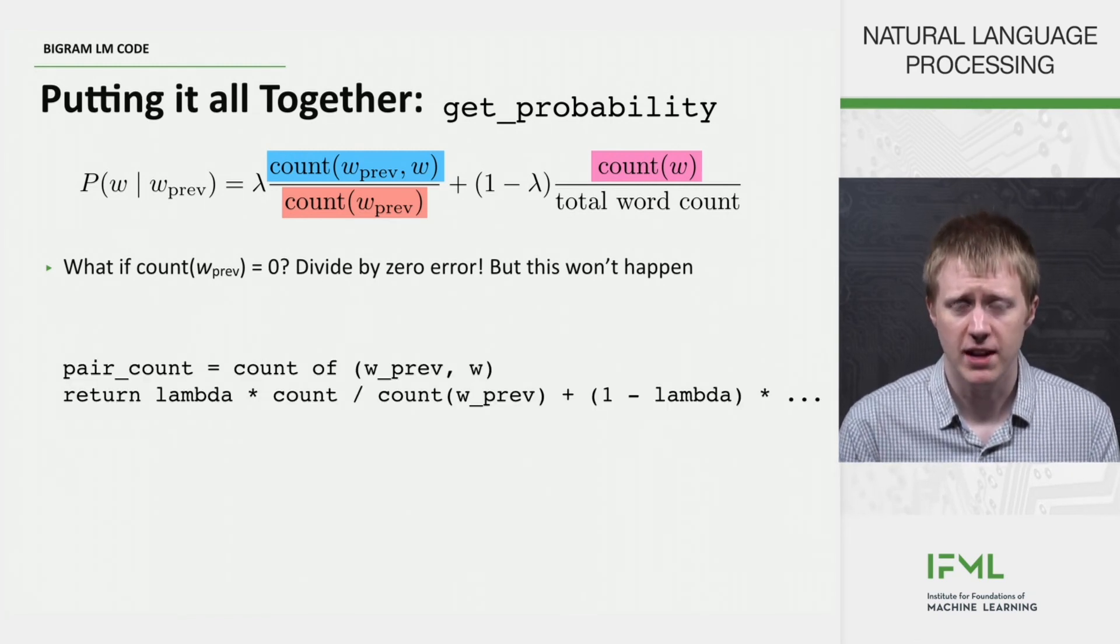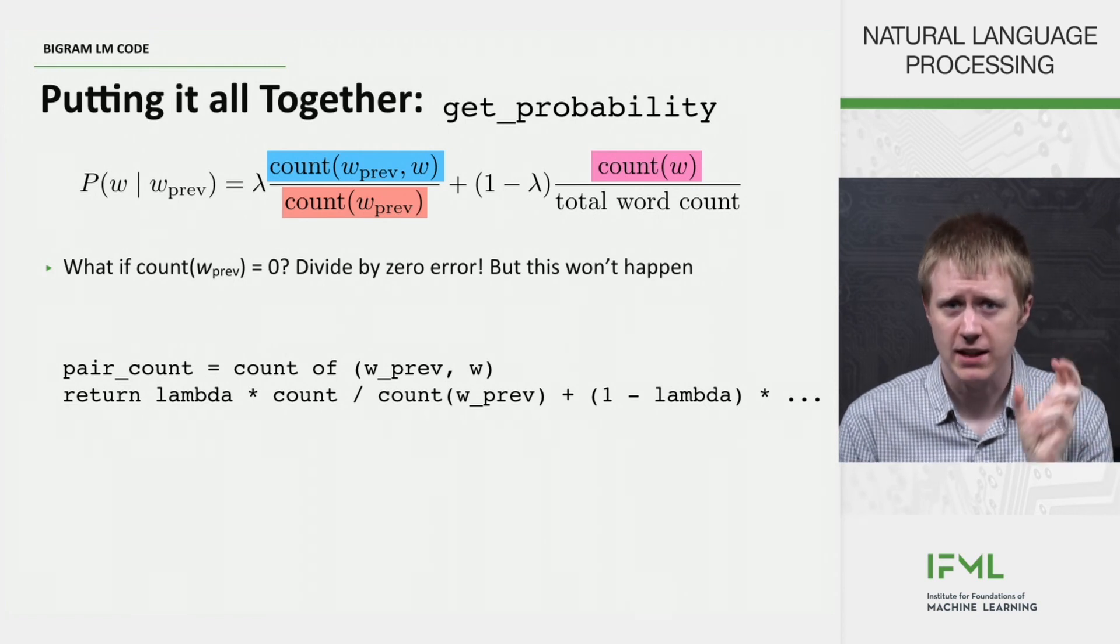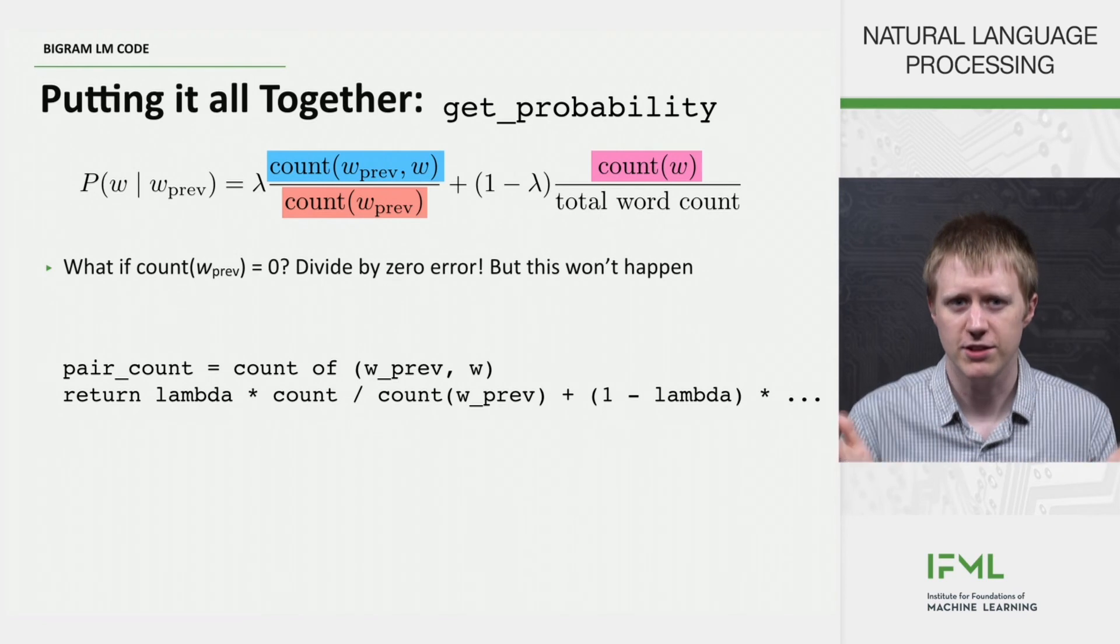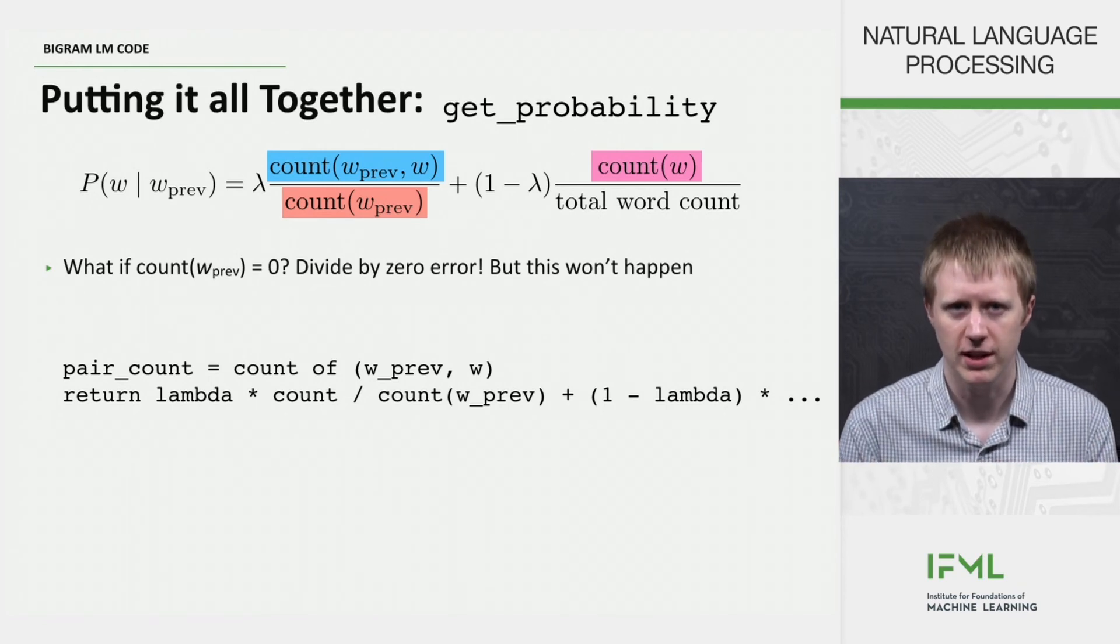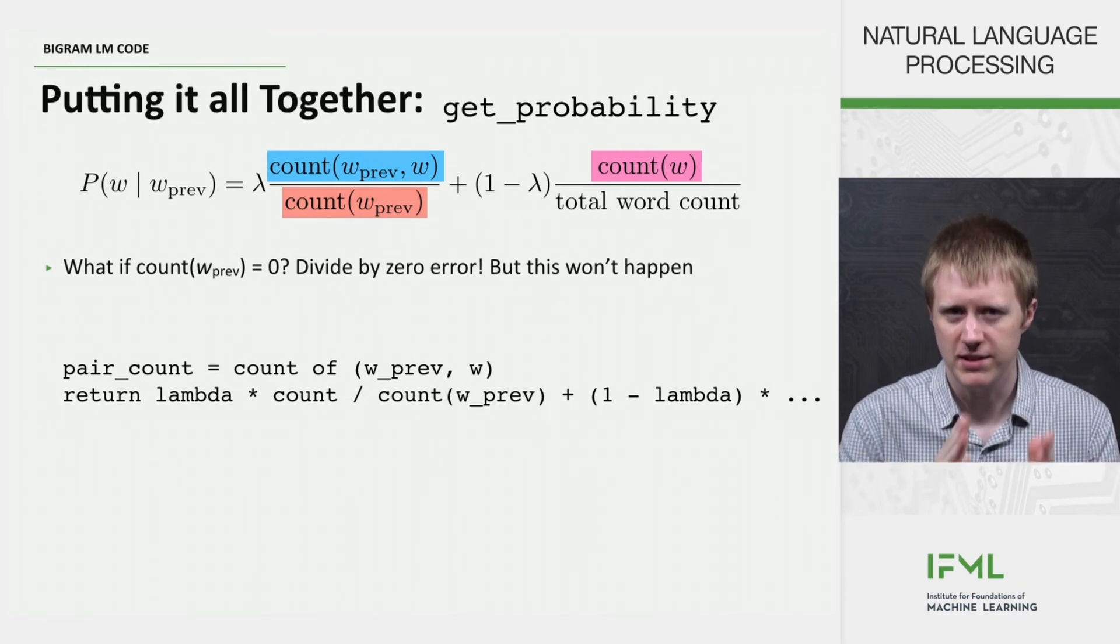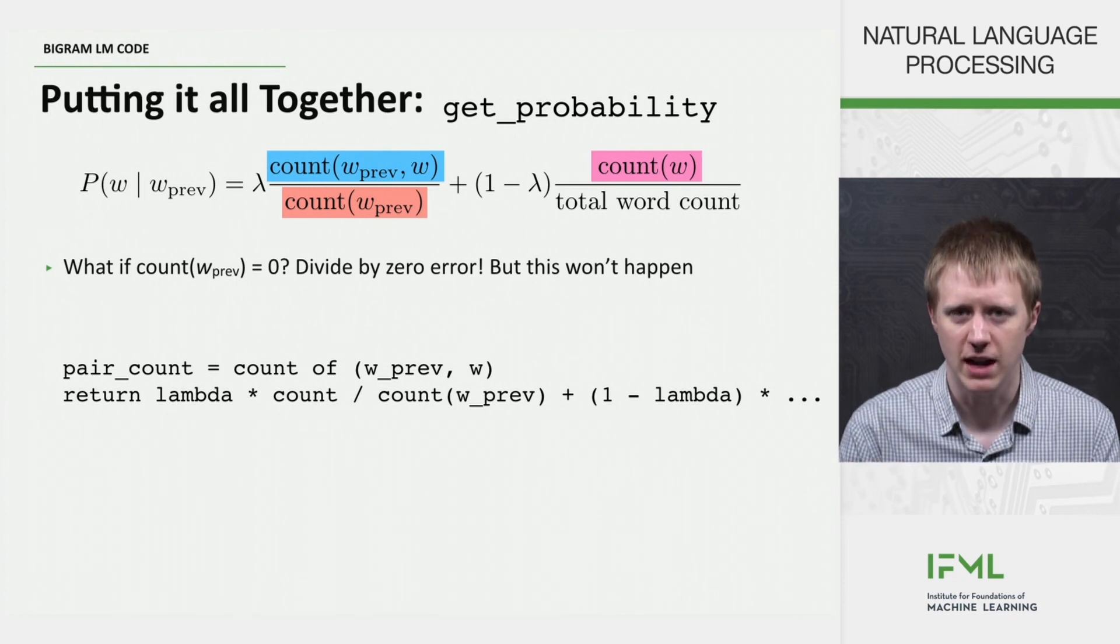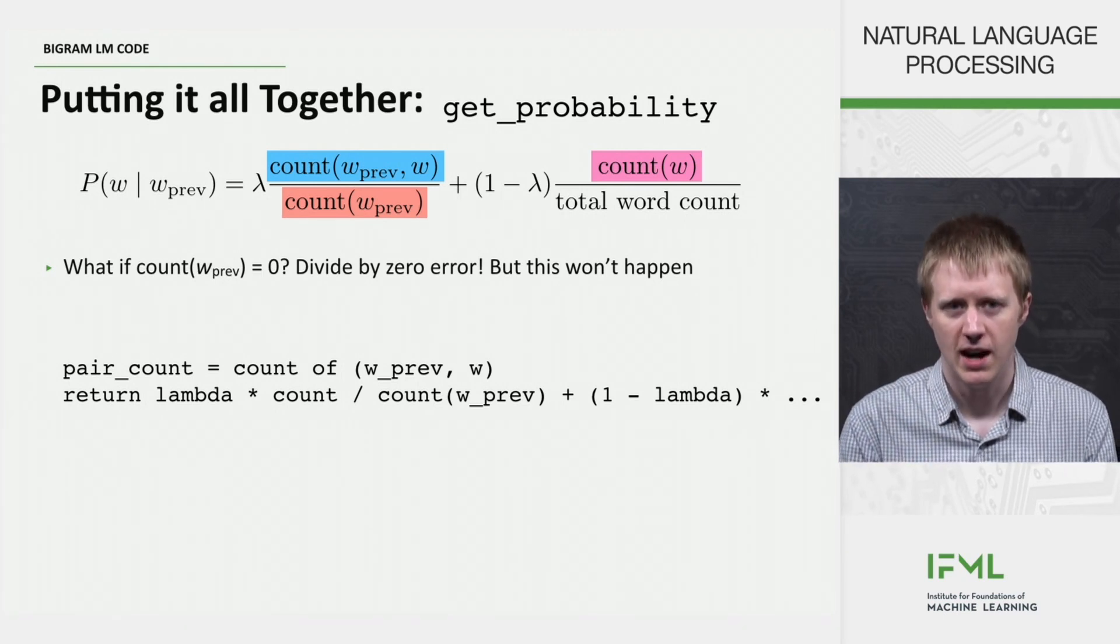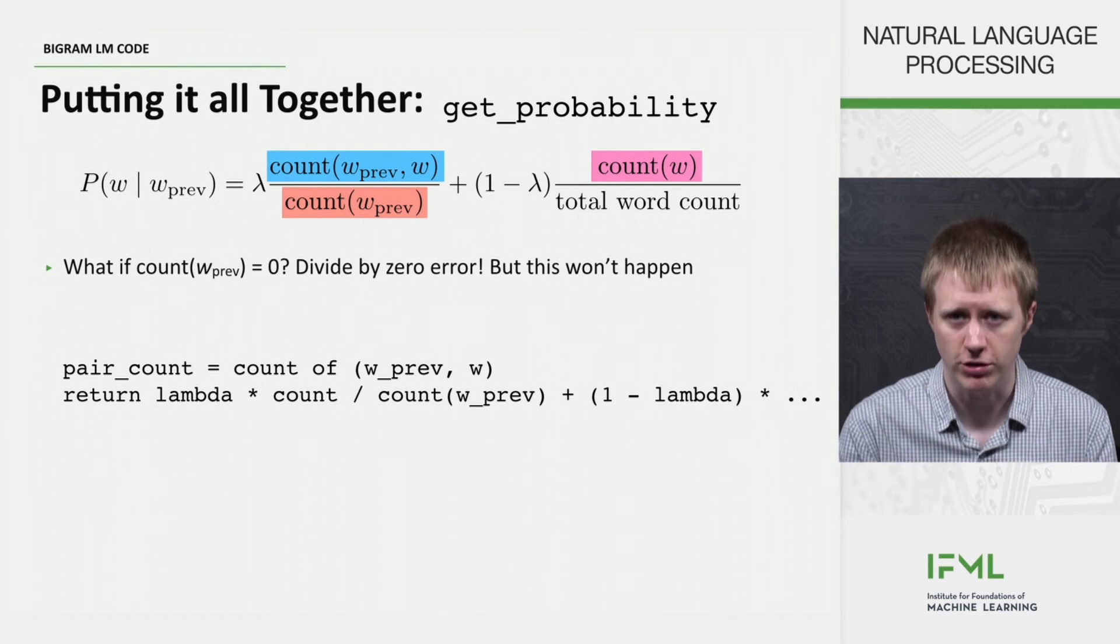So basically what happens then is we extract these counts that we need from these data structures. And this is the kind of pseudo code for what this looks like. So then we return basically just kind of writing out this formula here like this. So these counts, count w_prev, etc., need to actually retrieve the stuff from the data structure. But this is what the general structure looks like.